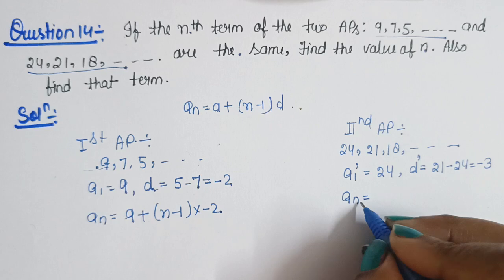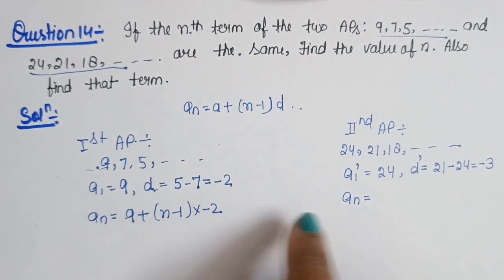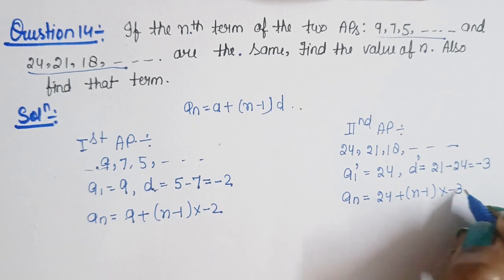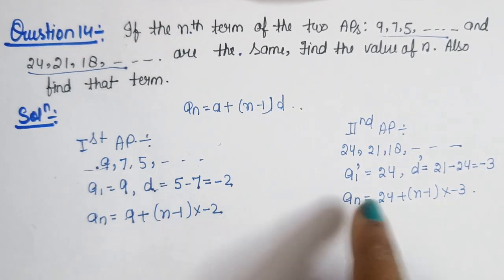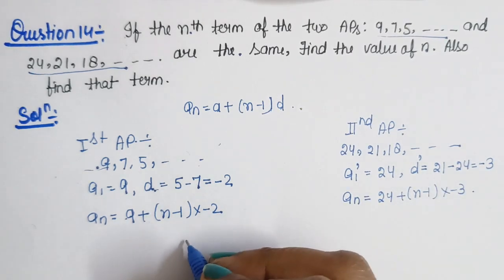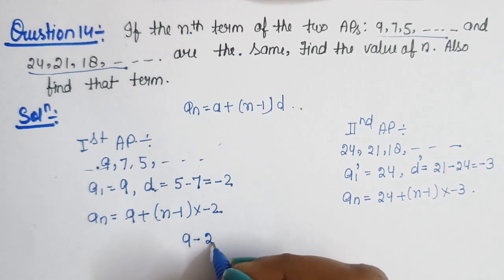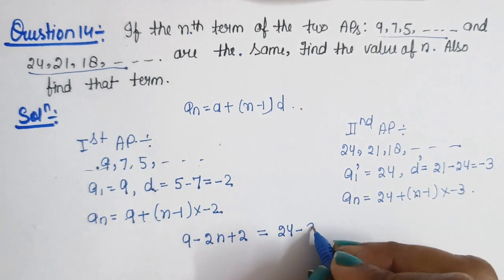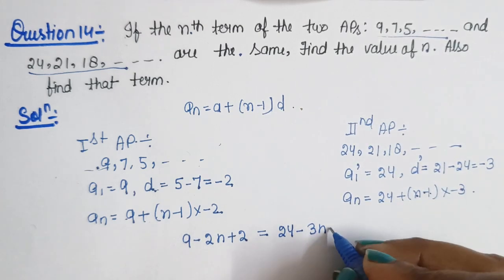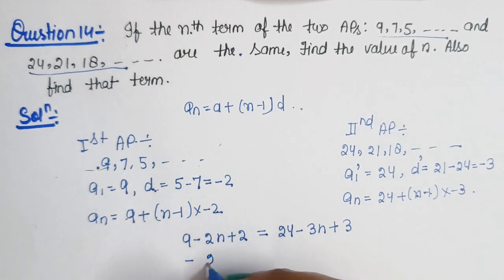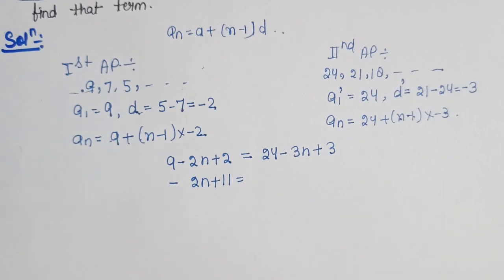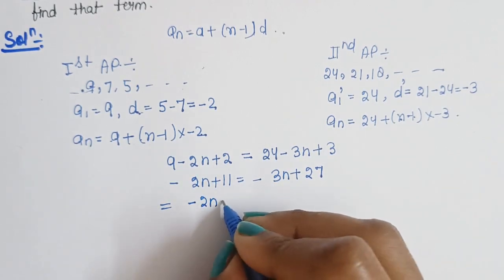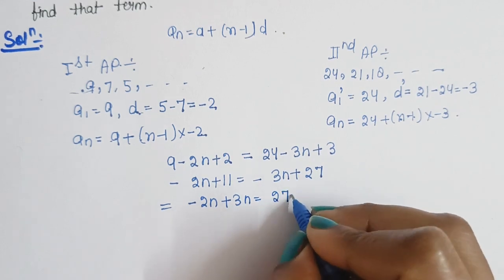Since both nth terms are the same, we equate: 9 + (n − 1)(−2) = 24 + (n − 1)(−3). Expanding: 9 − 2n + 2 = 24 − 3n + 3, which gives −2n + 11 = −3n + 27. Rearranging: −2n + 3n = 27 − 11, so n = 16.